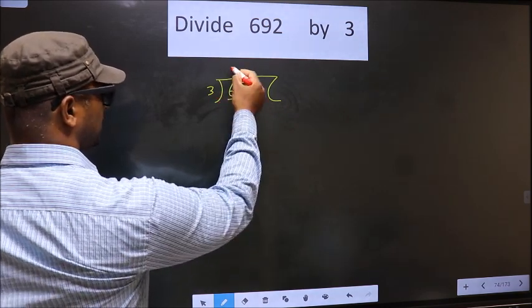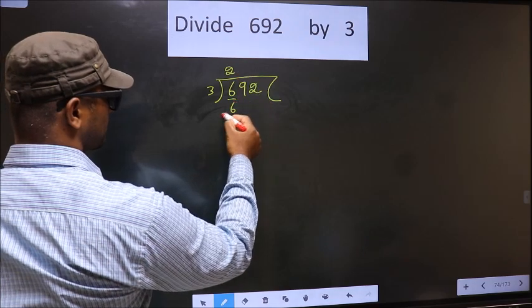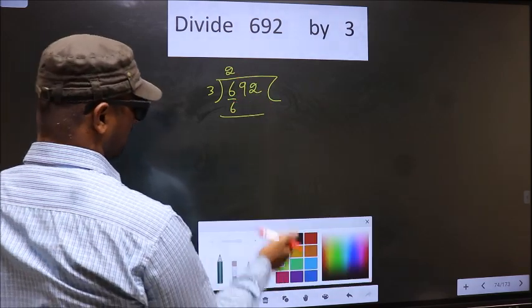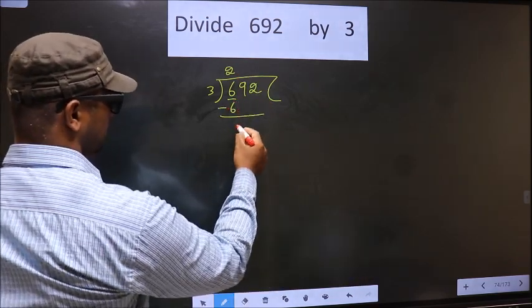When do we get 6 in 3 table? 3 to 6. Now, you subtract 6 minus 6, 0.